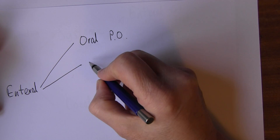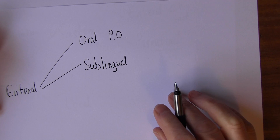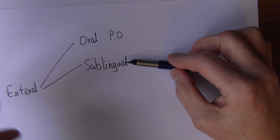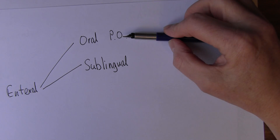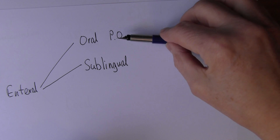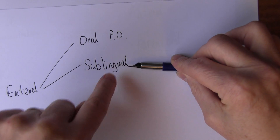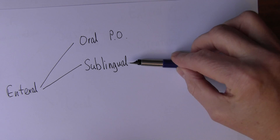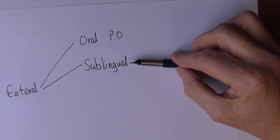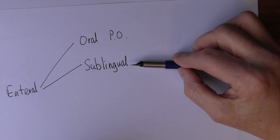Another way we quite often give drugs is sublingual — under the tongue. If we give a drug into the stomach, it has to be absorbed into the veins that drain the stomach, into the capillaries and veins, and those veins go into the hepatic portal vein to go through the liver first, which slows things down and the liver breaks down some of the drug. Given sublingually, the mouth drains directly into the systemic circulation, so it tends to go in more quickly and isn't broken down on the first pass through the liver. For example, glyceryl trinitrate to relieve angina pectoris can be given sublingually and can work very effectively.